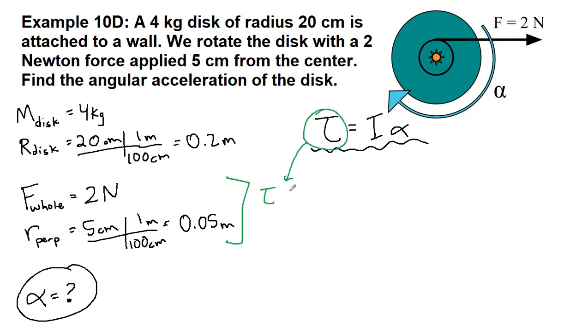So the torque here is the total force times the perpendicular distance—that's something we discussed and worked with all throughout chapter 9. So 2 newtons times 0.05 meters equals 0.1 newton meters.